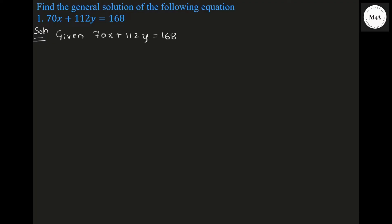To find GCD of 70 and 112, we need to follow the extended Euclidean algorithm.